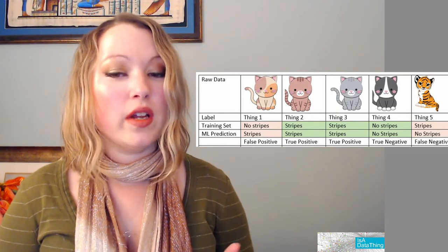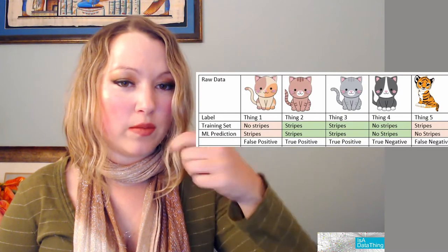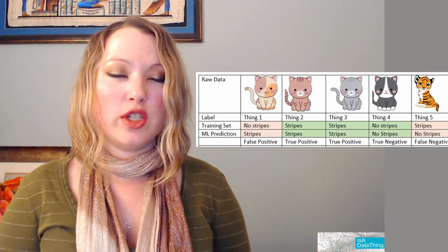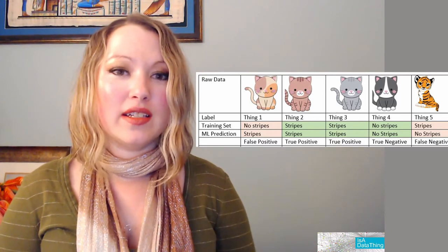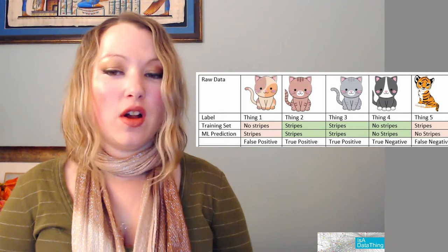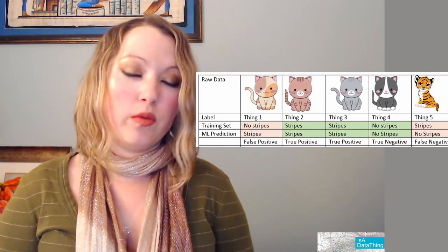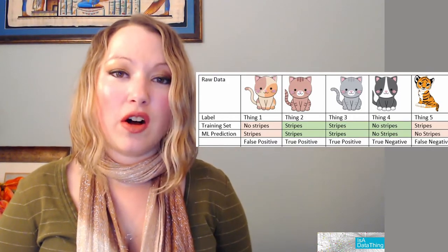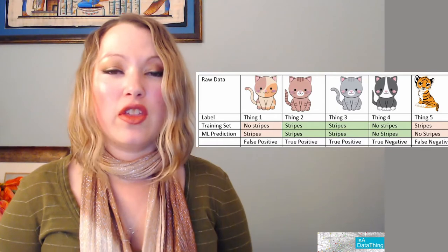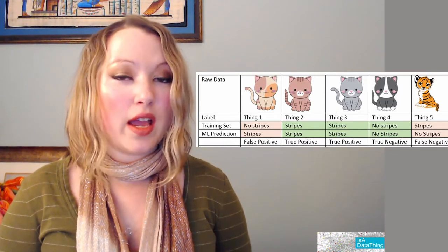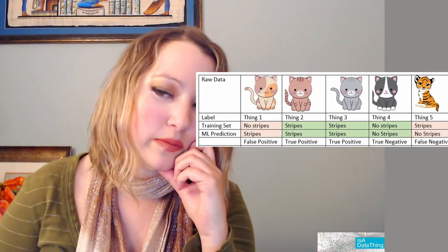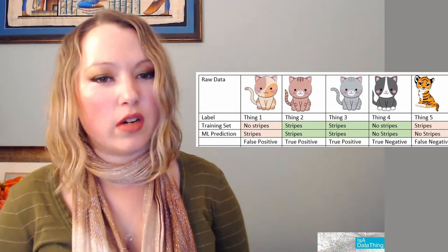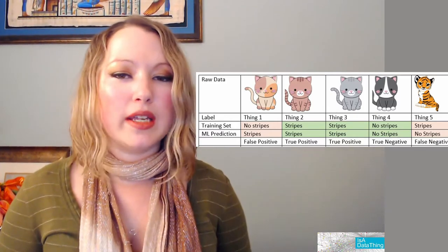Things two and three both have stripes — correct. Thing four is a true negative, which means we taught it that thing four does not have stripes, and the machine learned this does not have stripes — bingo, that's good. Now the next one is a false negative. Thing five does have stripes, but the machine comes back and says it sees patches, so it thinks it's patches instead of stripes. You got it wrong — you would try to recalibrate for that.